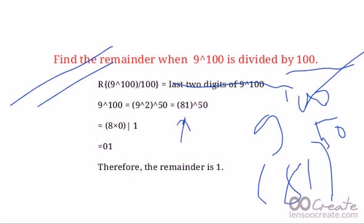Therefore, the number will always end in 1. The tens digit will be 8 times 0, which is 0. Therefore, the last two digits are 01. That is nothing but the remainder when 9 raised to 100 is divided by 100.